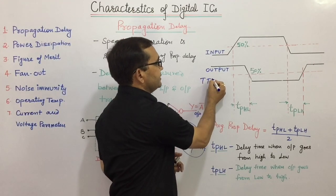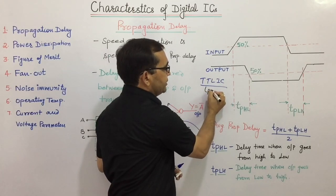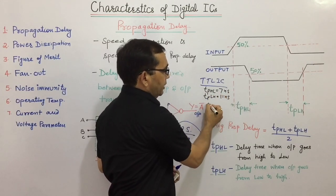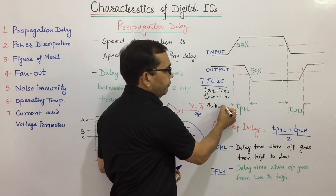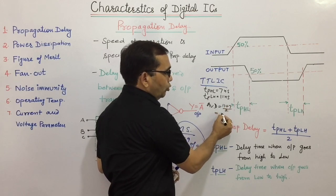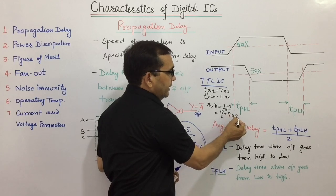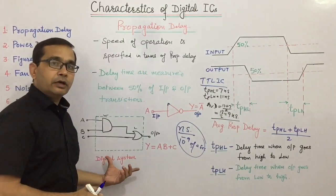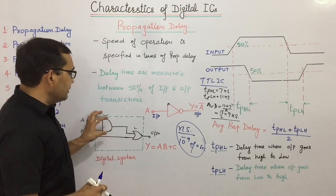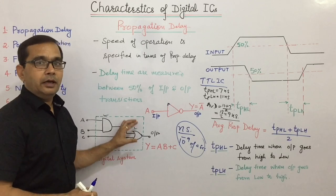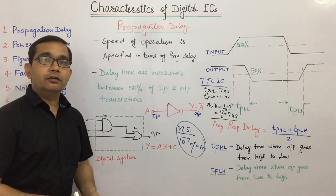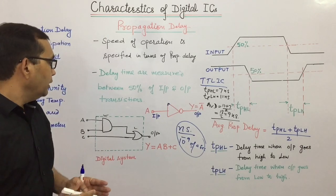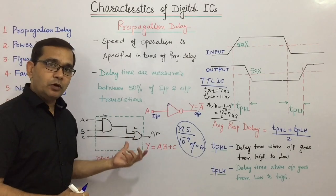For example, for a standard TTL IC, if TPHL equals 7 nanoseconds and TPLH equals 11 nanoseconds, then the average propagation delay will be (11 + 7) / 2 = 9 nanoseconds. The speed of operation of an IC is always specified in terms of propagation delay. If there is less propagation delay, the speed of operation will be more. So it is always advantageous to have a smaller propagation delay.